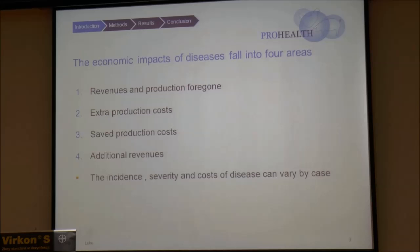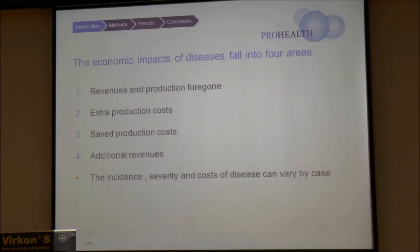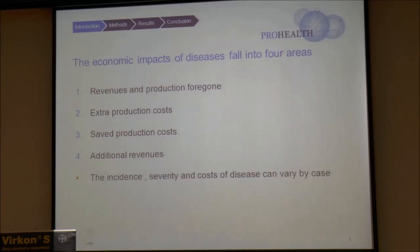In some cases there may also be cost savings. For instance, if a sow or a piglet dies, it doesn't consume as much feed as it otherwise would. Cost savings are more relevant when thinking about the effects of preventive measures. In some cases there might also be additional revenues — for example, if you cannot sell a pig to a slaughterhouse because of medication and it grows a little bit heavier, the value of that animal might increase. But usually the main effects of production diseases relate to the first two items, and economic impacts can vary case by case.